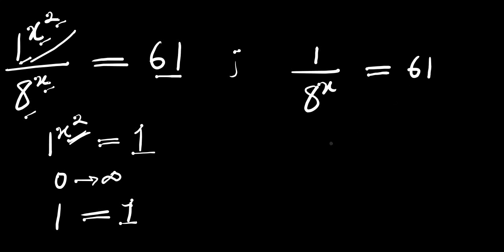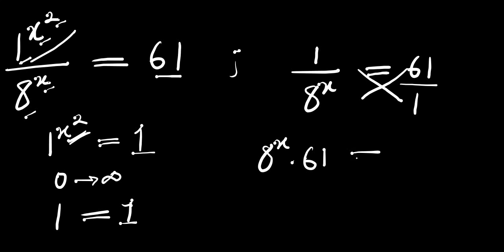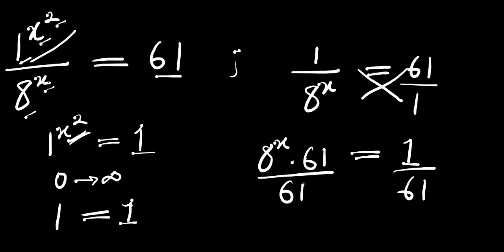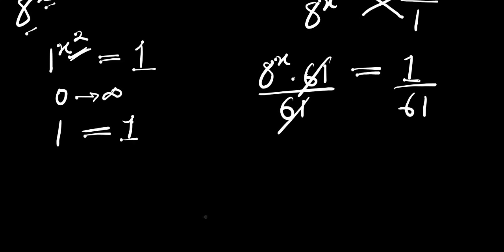So the next thing we are going to do is cross-multiply — this is divided by 1. So if we cross-multiply, we are going to have 8 to the power of x times 61 equals 1. Now from here we divide each part of this equation by 61, so 61 will cancel 61, and we have 8 to the power of x equals 1 divided by 61.